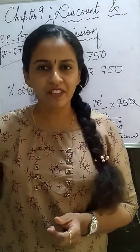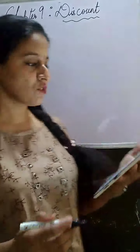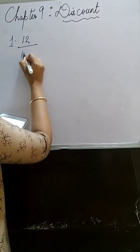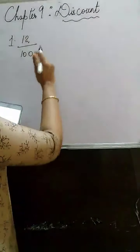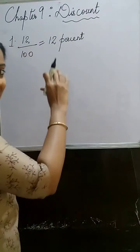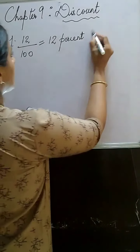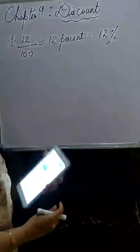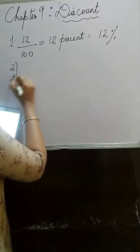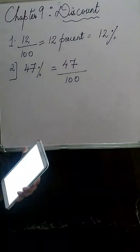Now let us solve the numericals from the textbook. There is a 'Let's Recall' section — this was done in your seventh standard. Write the appropriate numbers in the boxes. First: 12 upon 100 — the denominator is 100, so 12 upon 100 is nothing but 12%. When finding percentage, you multiply by 100, so 12/100 equals 12%.